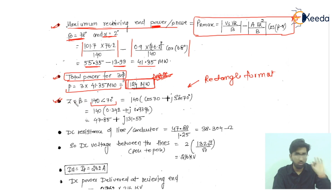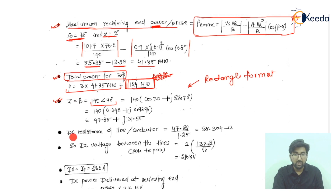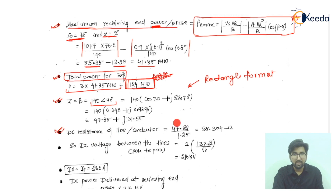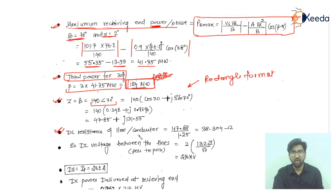Since we need to find the DC power, we find the DC resistance of the line conductor. The DC resistance is 47.85 divided by 1.25, which gives 38.305 ohms.